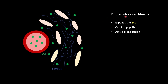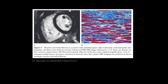Diffuse interstitial fibrosis causes expansion of the ECV, as seen here, and occurs in certain cardiomyopathies or amyloid deposition. When contrast is given, gadolinium deposits in the interstitial space or fibrosis. Sometimes on a late gadolinium enhancement image, diffuse fibrosis may not show obvious enhancement — enhancement might be very subtle and we may not be sure whether it is enhancing or not.